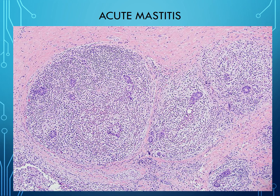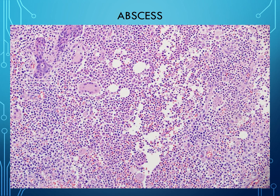Under the microscope, acute mastitis shows terminal ductal lobular units completely overrun by inflammatory cells, with only a few residual acini remaining. In an extreme case leading to an abscess, all that remains are maybe a duct or two, some multinucleated giant cells (histiocytes), and many neutrophils — which is essentially pus.